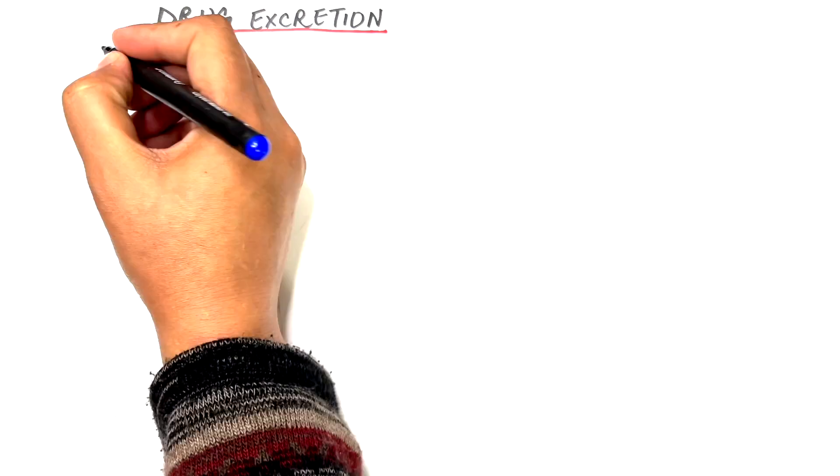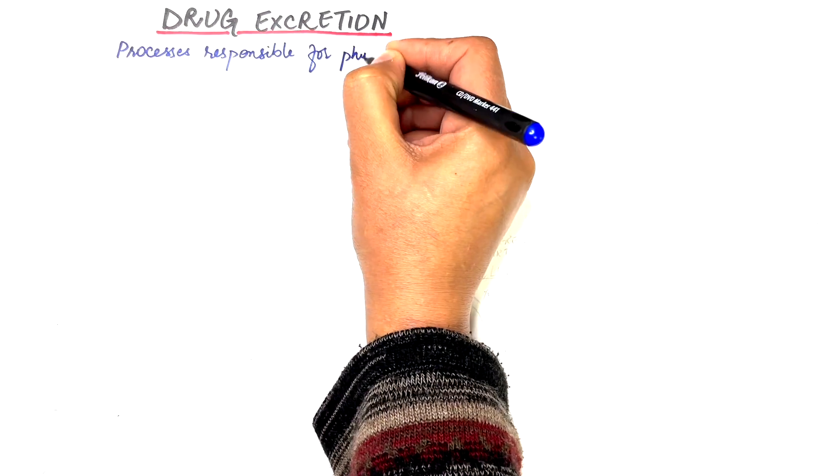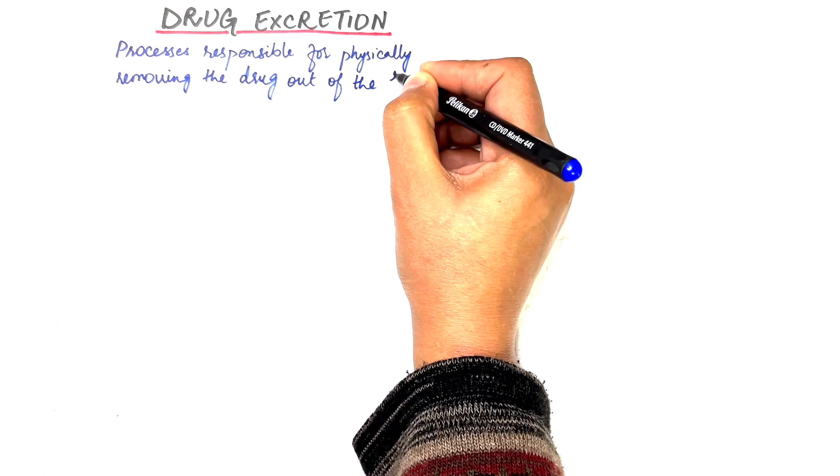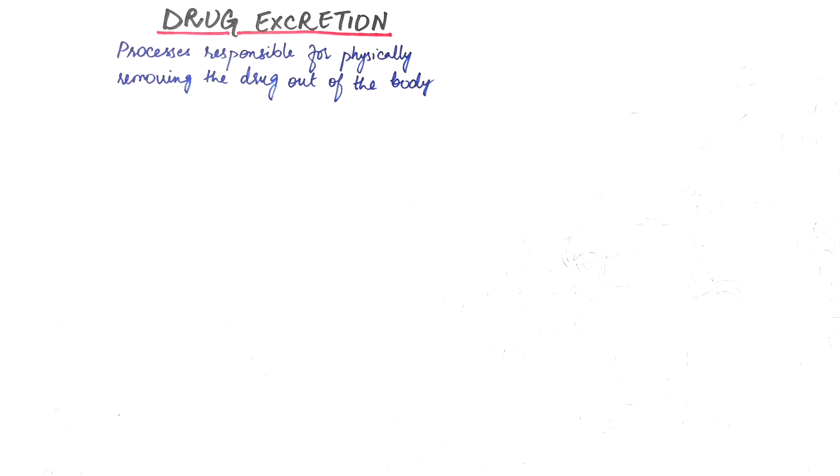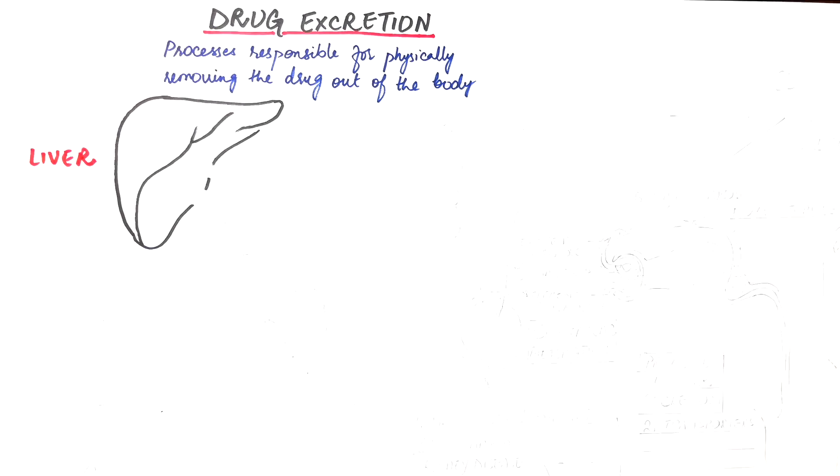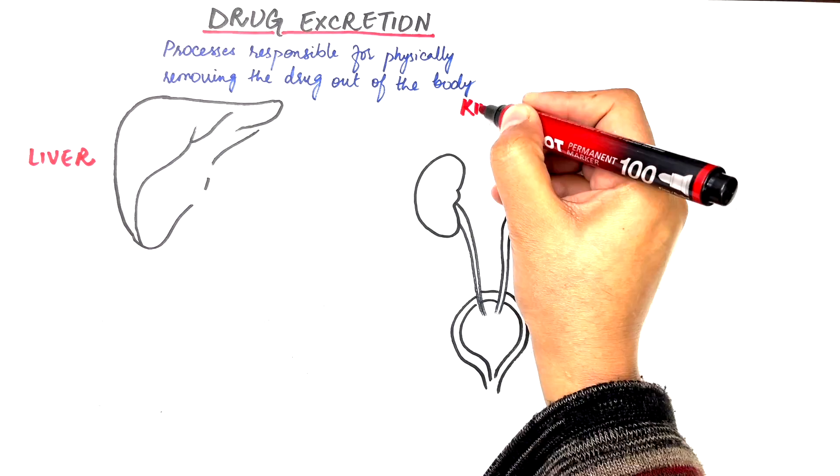Drug excretion involves processes responsible for physically removing a drug out of the body. The main organs for excretion of the drug are the liver and the kidneys.